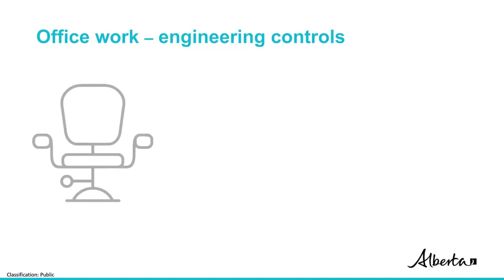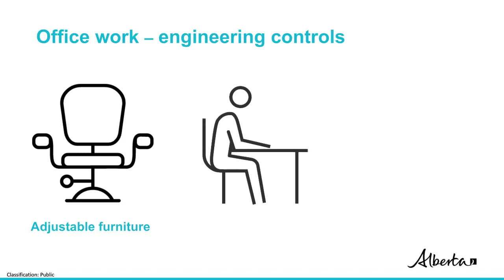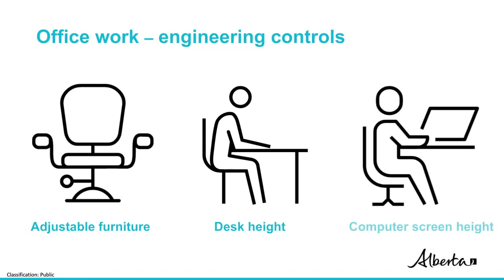Provide adjustable furniture such as chairs, desks, and keyboard trays to minimize awkward postures and contact stress. Adjust the chair so the knees and hips are at 90 degree angles with the feet flat on the floor or on a footrest. Adjust the backrest and the chair's seat pan so the low back is well supported. Adjust the desk height to be at or slightly below the elbow height. Have the worker's forearms approximately horizontal with the wrists not bent back. Adjust the height of the computer screen to be below eye level and about an arm's length away.